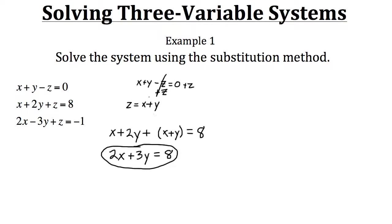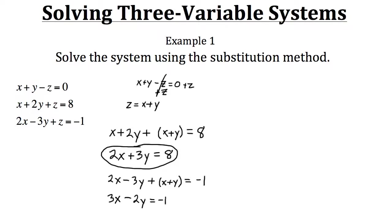Now let's plug the expression for z into the third equation. We have two x minus three y plus z, where z is x plus y, and that equals negative one. Simplifying: two x plus x gives us three x, and negative three y plus y gives us negative two y. So our new third equation is three x minus two y equals negative one.